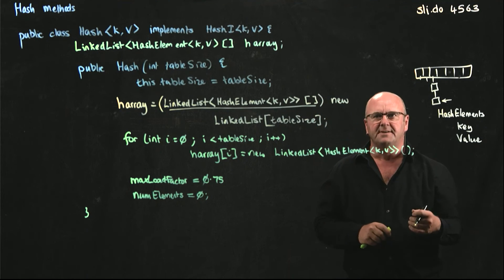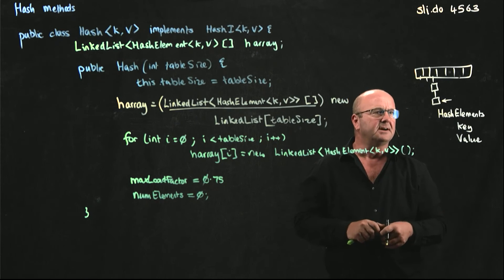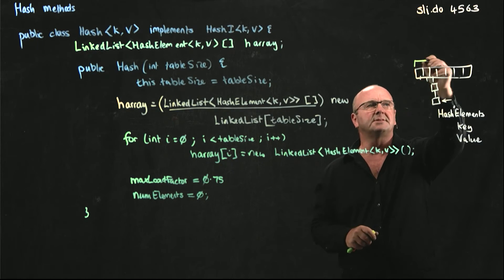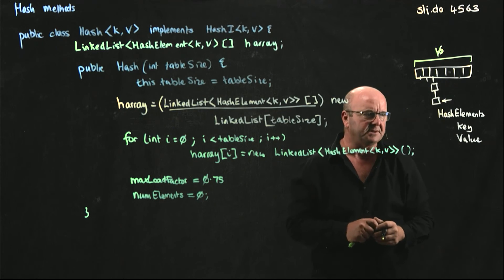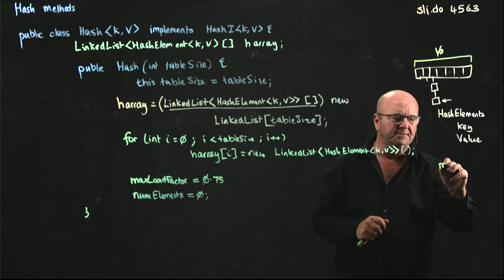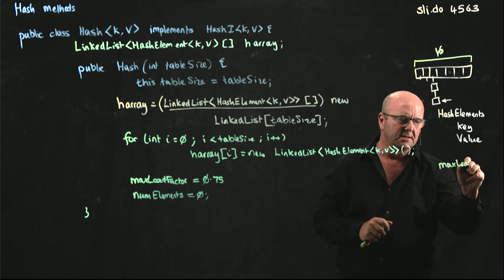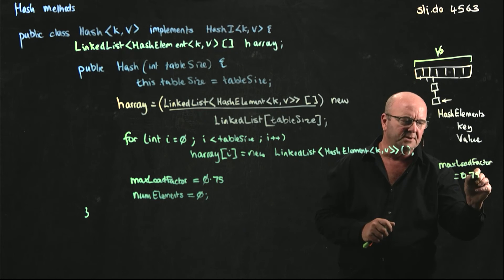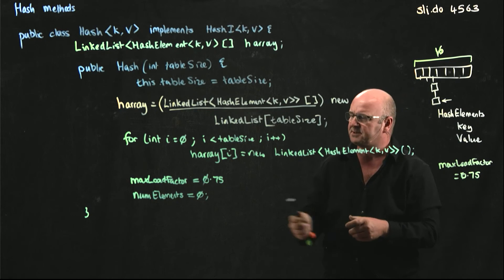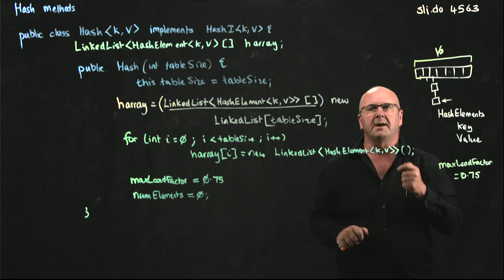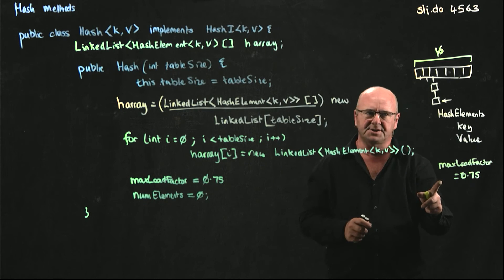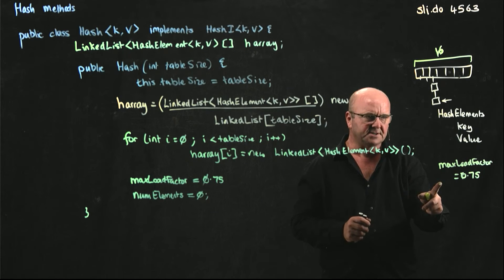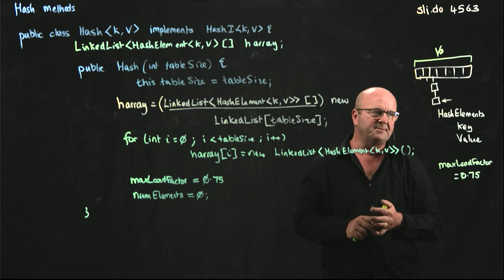But if you look in the Java API, the default table size in the Java API is 16, which is neither prime nor odd. And the default max load factor in the Java API is 0.75, the same as I've put here. So how many elements do you have to add to one of the default hash classes in the Java API before it will resize?